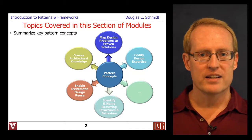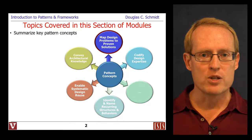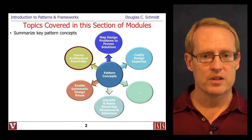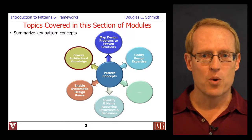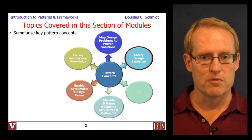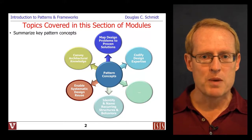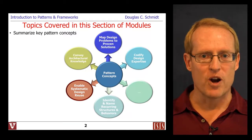The first module will give you an overview of some of the key concepts underlying patterns. A pattern is a reusable solution to a common problem that arises in a particular context or application domain. Patterns can be used to identify and name recurring structures and behaviors. They also help to capture software architecture knowledge that historically has been either locked in the heads of experts or buried deep in the source code. Patterns can also codify design expertise and make it usable for both beginners and experts to make them more efficient and productive, and help to enable systematic reuse, so people spend less time rediscovering and reinventing core design insights through trial and error.